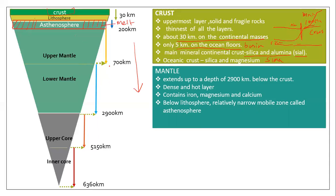The average temperature increase as you go deeper is 1 degree Celsius per 32 meters, though this varies from place to place. After 100 km depth, the rate rises to about 12 degrees Celsius per km. When you reach around 300 km depth, the increase reduces to about 2 degrees Celsius per km.